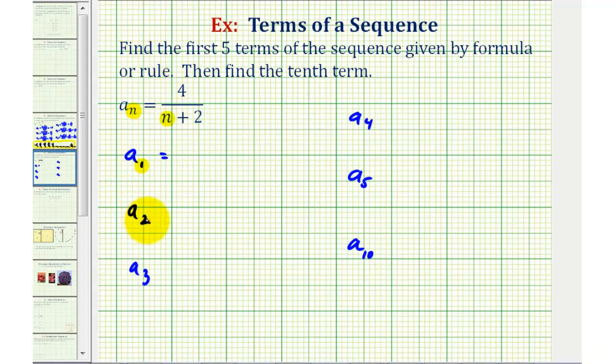To find a sub two, we substitute two for n, to find a sub three, we substitute three for n, for a sub four, we substitute four for n, for a sub five, we substitute five for n, and finally for a sub ten, the tenth term, we substitute ten for n.